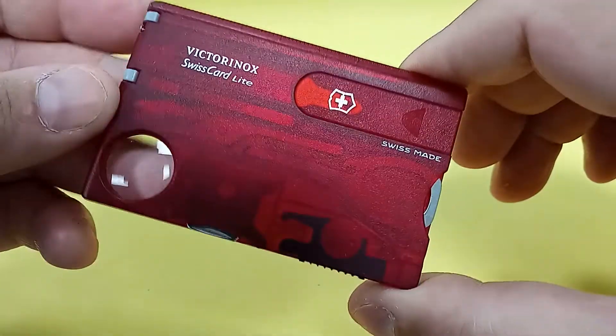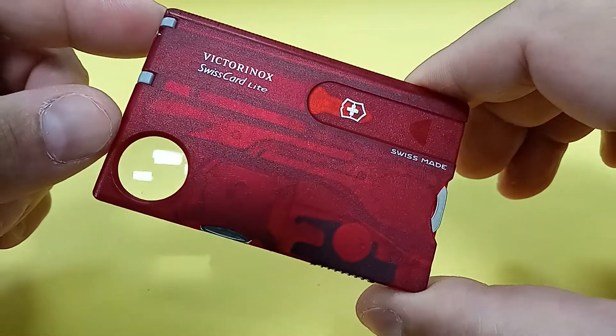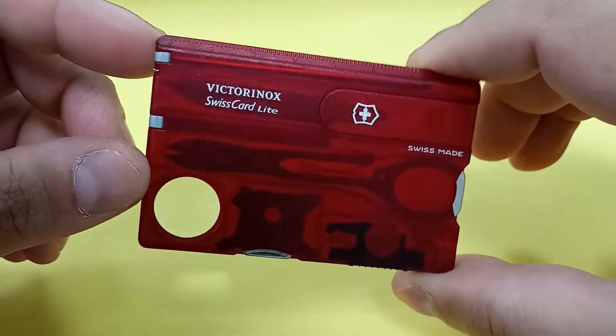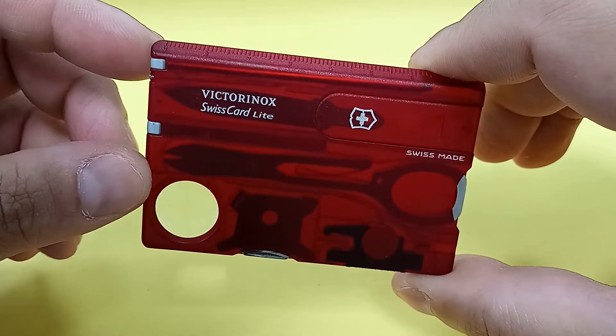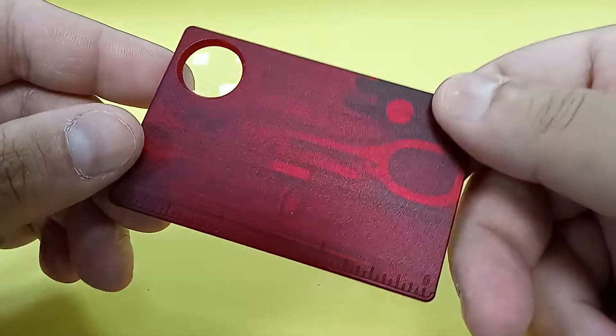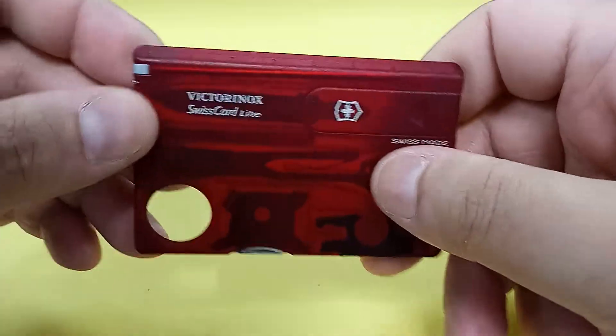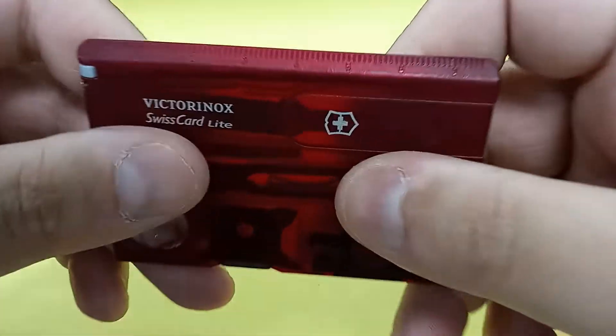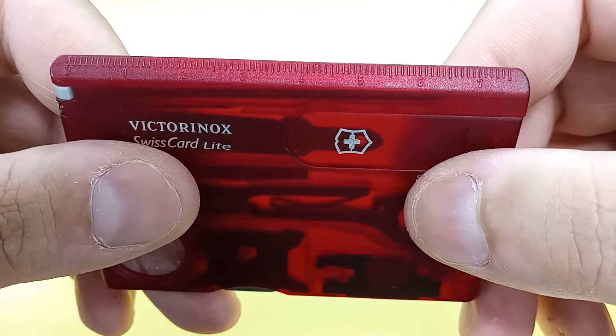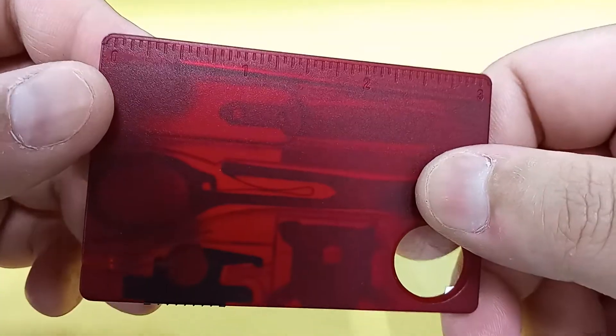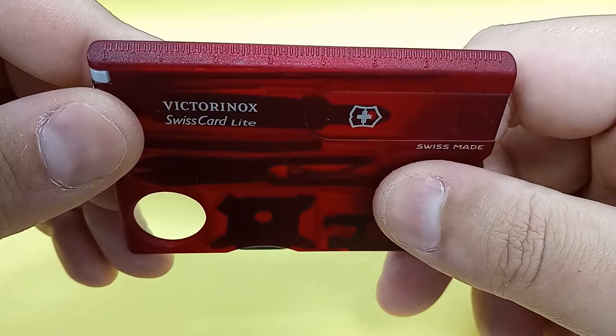Now as you can see, the housing is translucent plastic. You can clearly see all the tools and items underneath. Here on the very top you have a ruler, and it's on the other side as well. Inches and centimeters.